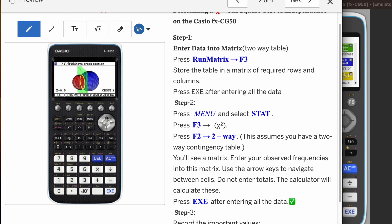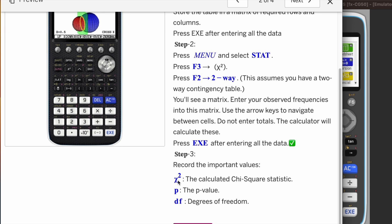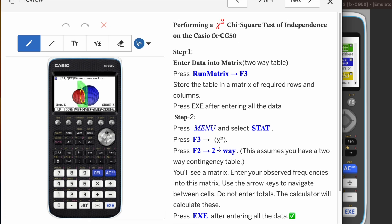We'll click on F3 which is chi-square, then F2 which is called two-way table, and that's it. We will have our results ready: chi-squared, P, and DF. You need to record these three values and then compare to conclude the test.